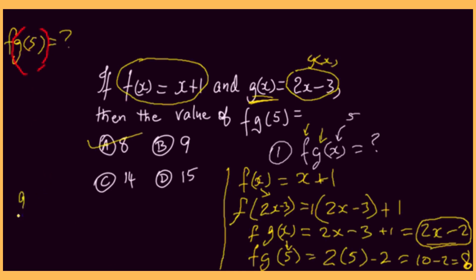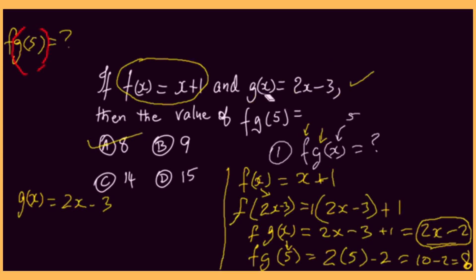So let's work out g of 5. G of 5 is 2x minus 3, according to what's been given to us. Since we want to find g of 5, we take the 5 and place it where x is — substituting x with 5. This gives us 2 times 5, which is 10, and 10 minus 3 is 7. So g of 5 is 7.